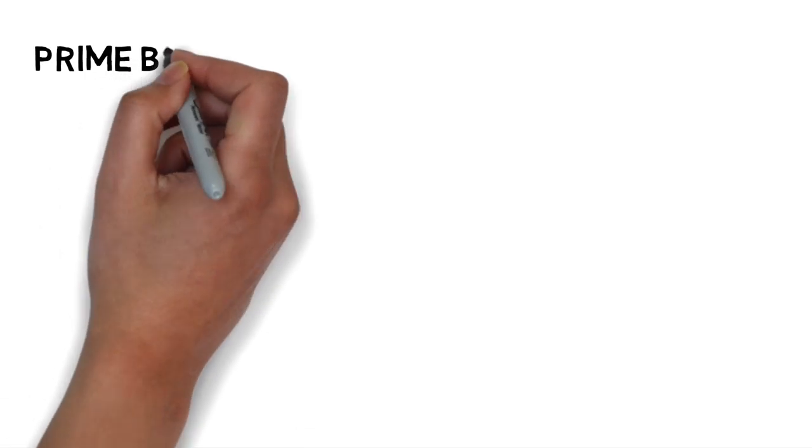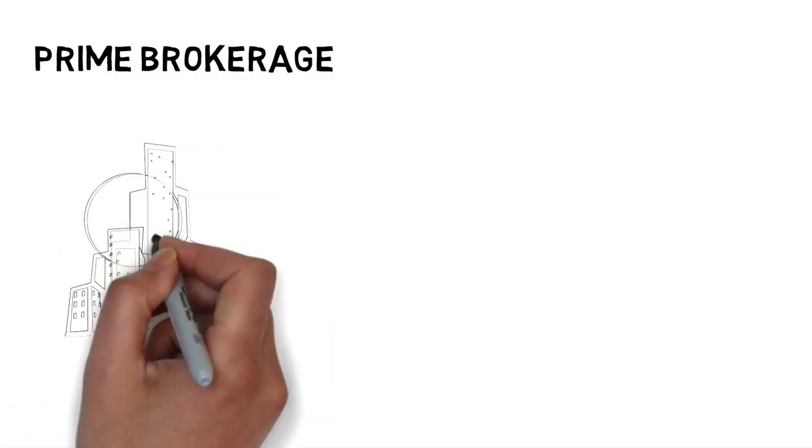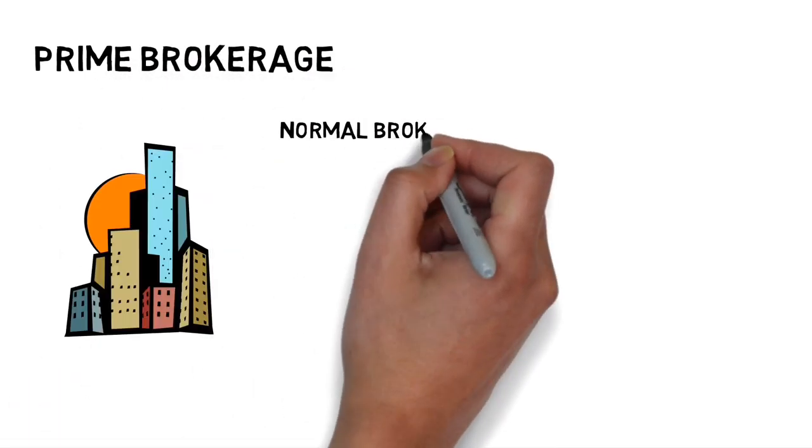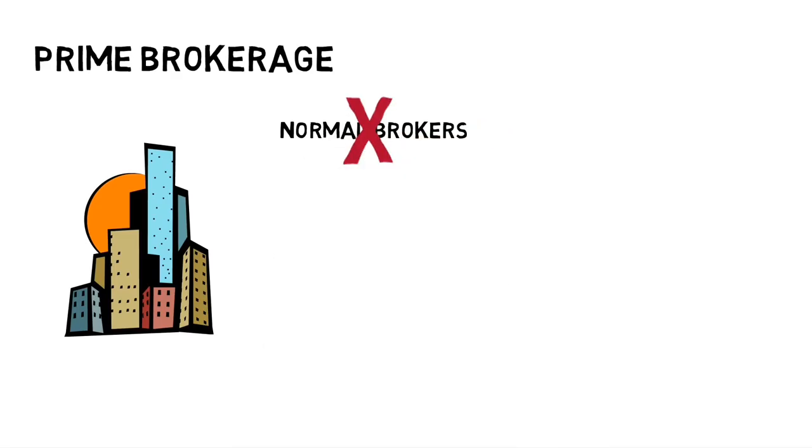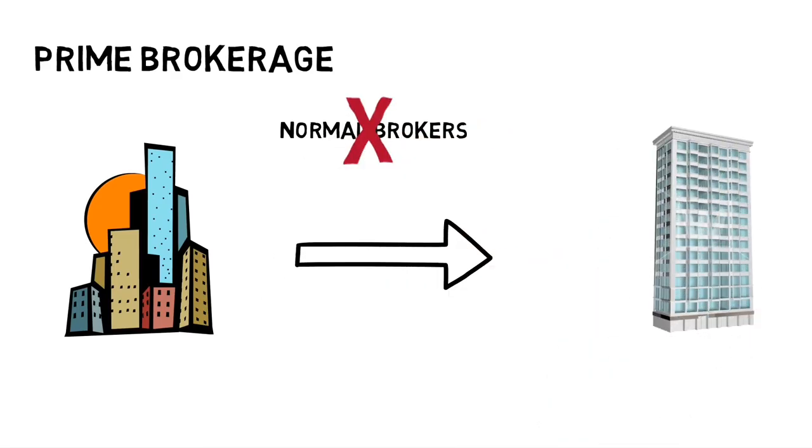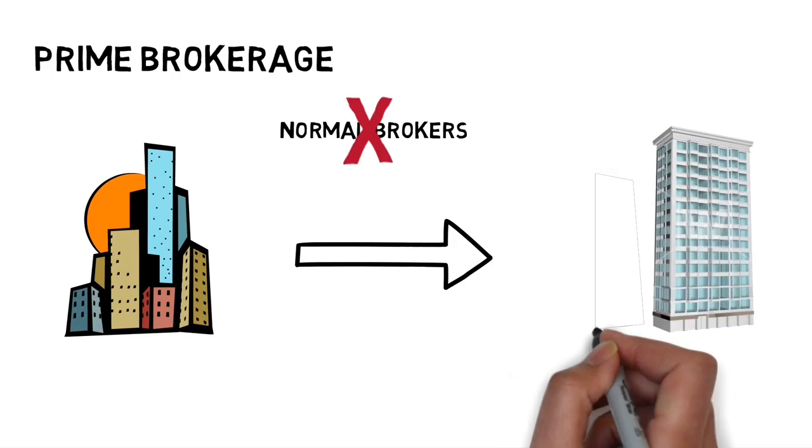The next source of revenue for investment banks is prime brokerage. When big hedge funds and financial institutions want to trade, normal brokers can't help them with their million dollar trades. This is where prime brokers such as Goldman help these funds set up their trades.